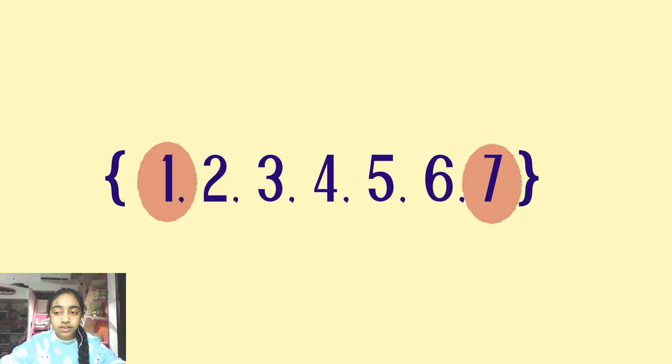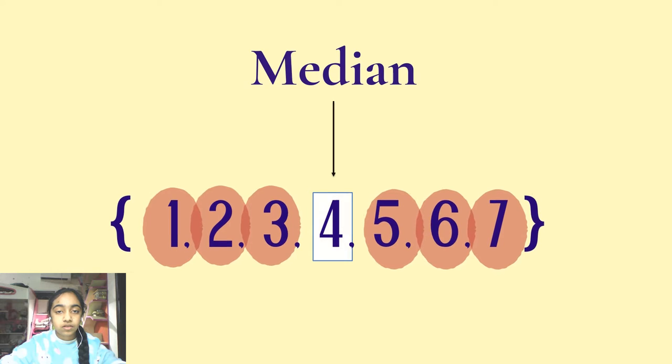Now we have to simultaneously keep circling the numbers in the right side and the left side until we reach our median number. So our middle number is 4. So that means our median is 4.